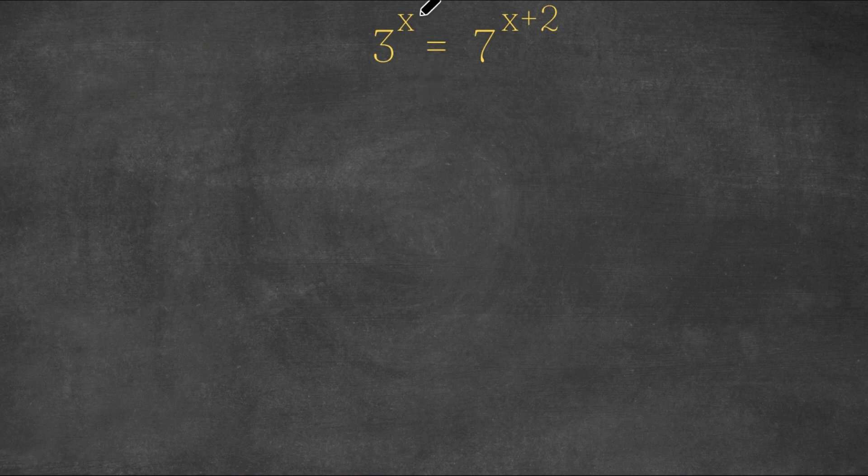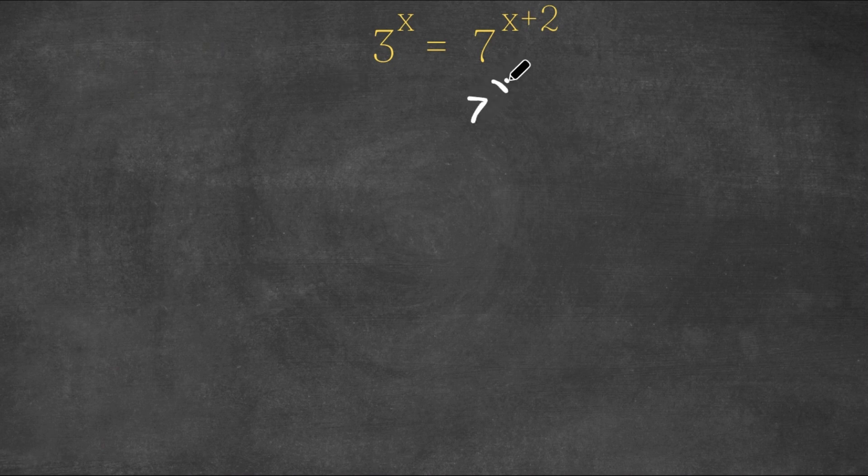We have 3 to the power of x is equal to 7 to the power of x plus 2. Now, 7 to the power of x plus 2 can be rewritten as 7 to the power of x times 7 squared.